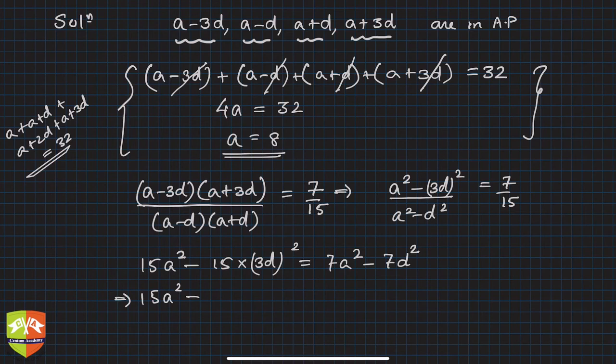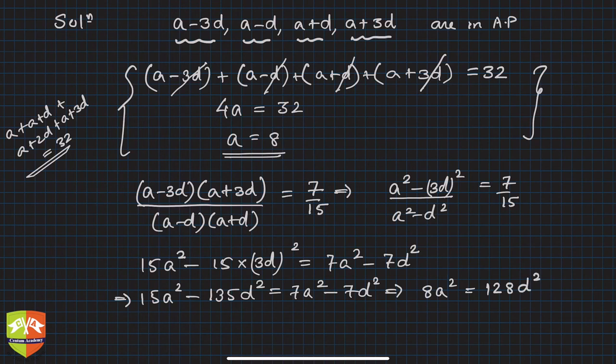This reduces to 15 minus 7 equals 8 a squared, and 135 minus 7 equals 128 d squared.